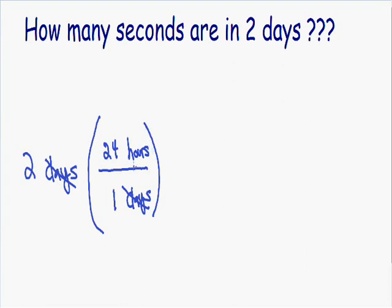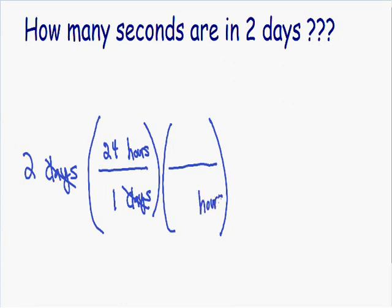But we can't leave our units in hours because this question is asking us to convert into seconds — how many seconds are in two days. So we need to make another conversion tool. In the denominator we put the units we're starting with; since we're starting with hours, we put hours in our denominator. In our numerator we put what we're ending with. Since I don't know how many seconds are in an hour, I do know how many minutes are in an hour, so I'll put minutes in my numerator. Our numerator and denominator have to be exactly equal: 60 minutes is exactly equal to one hour.